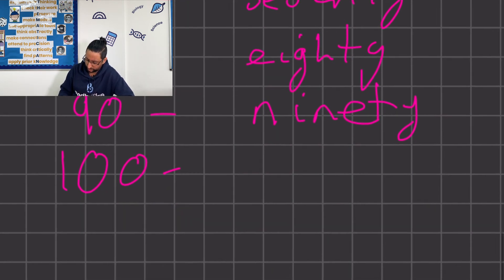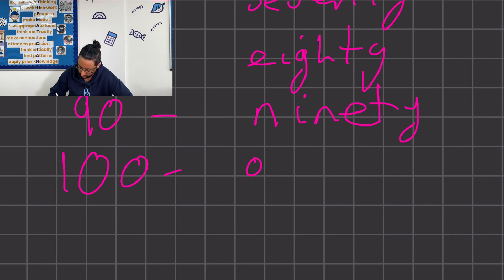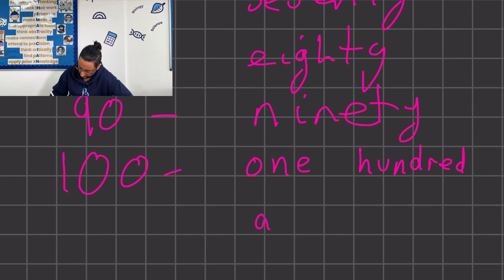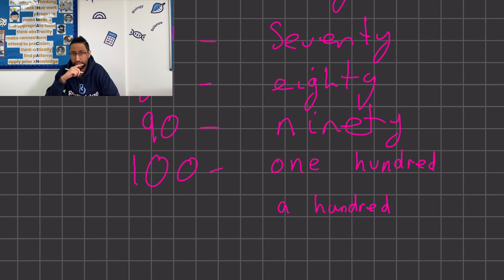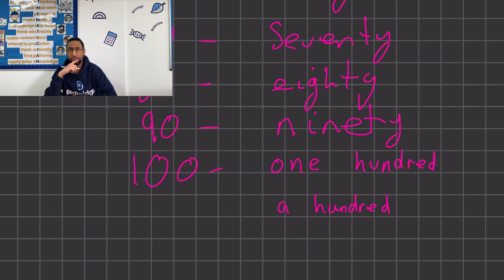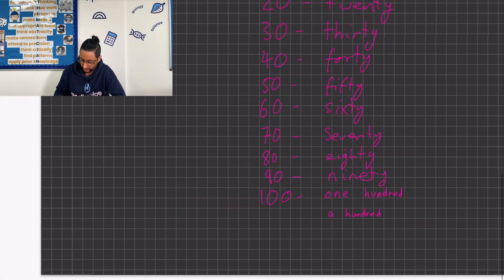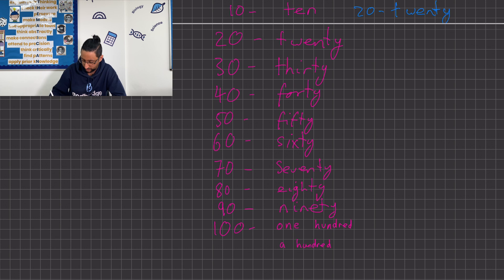For 100, you can write it in a couple of ways: you can write 'one hundred' or 'a hundred' — that only works with 100, it doesn't work with 200 for example. The same situation applies with 'a thousand' or 'one thousand'. So whenever you get to those milestones you have a choice between writing 'one' or 'a'.